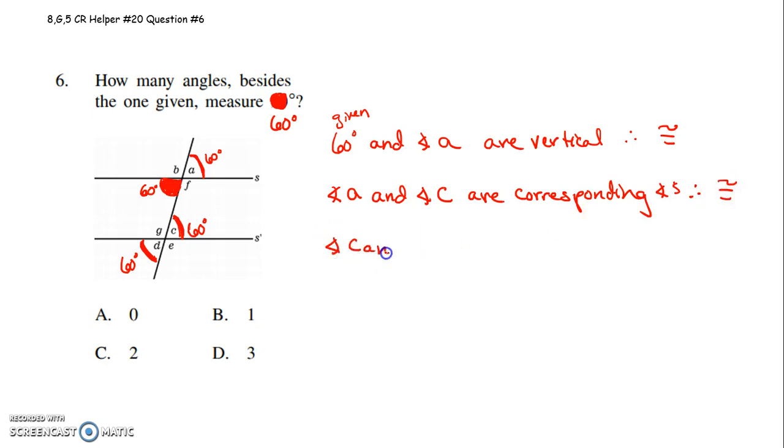Angle C and angle D are vertical. Vertical angles are opposite each other. When two lines intersect, that says vertical. Therefore, C and D are congruent.